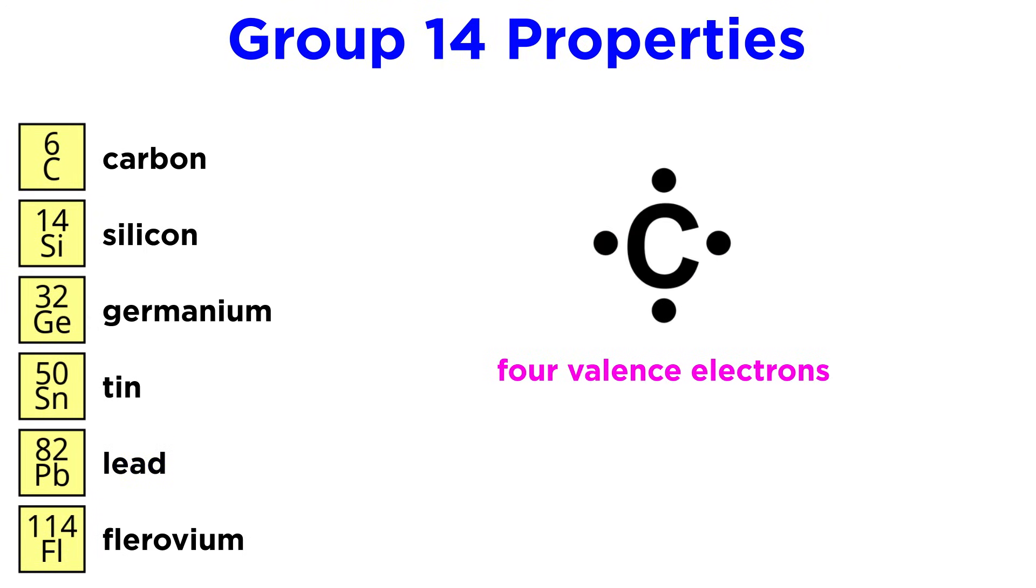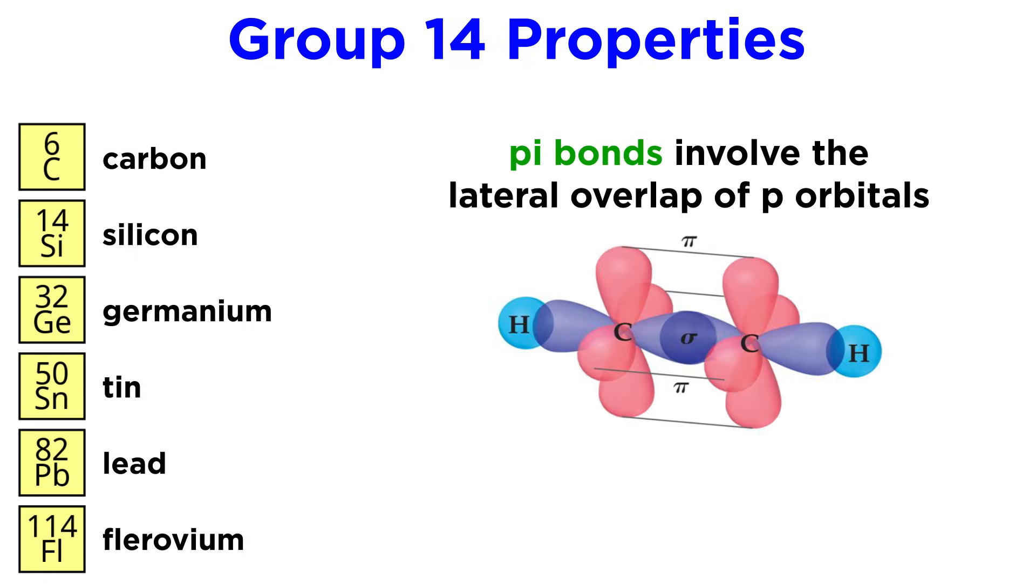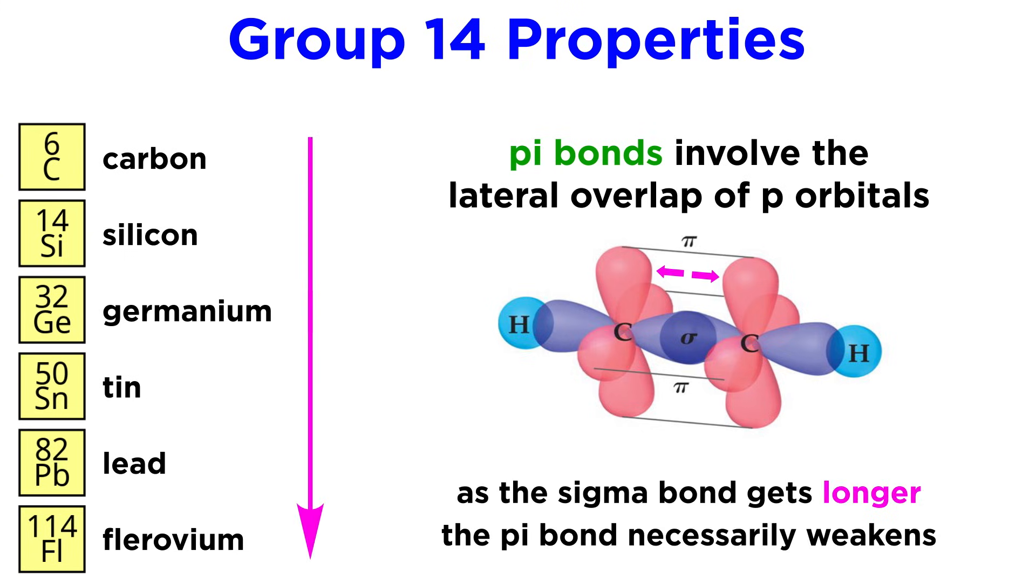To get into bonding behavior, the elements in this group all have four valence electrons, which allows for a range of hybridizations and therefore diverse structures. For example, pi bonds are possible between adjacent p orbitals. As we go down the group, these outermost p orbitals become larger, but they also get further away from one another.